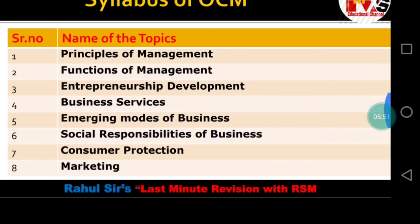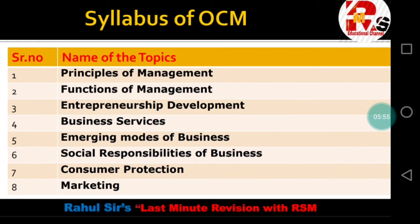Chapter seven covers the Consumer Protection Act, in short called COPRA. It's a very interesting topic — whenever any consumer is cheated, we will learn where they can file a case through the consumer redressal forum. Consumers are often not aware of their rights, so we will study the various redressal forums where a consumer can file a complaint against a seller if cheated with a product.